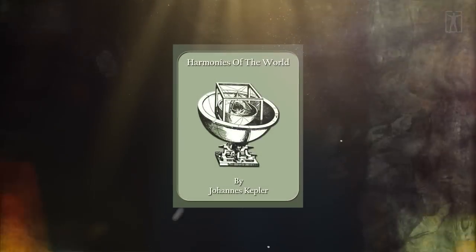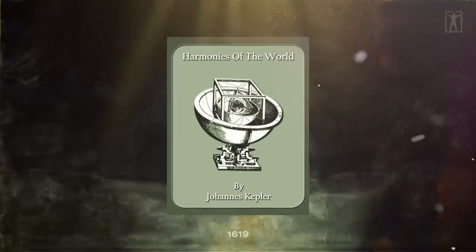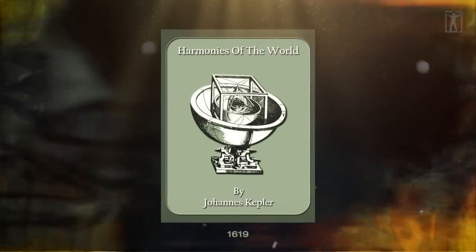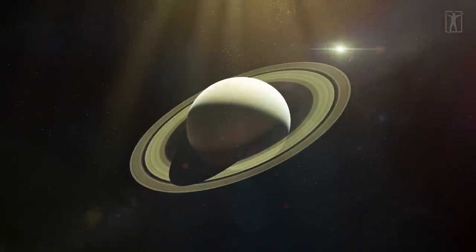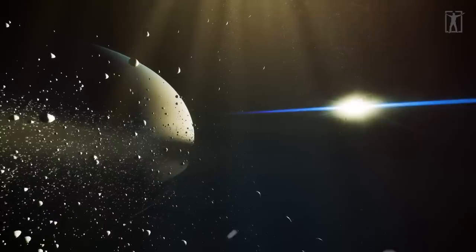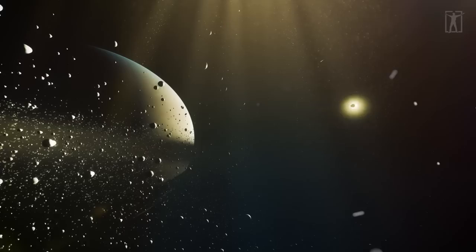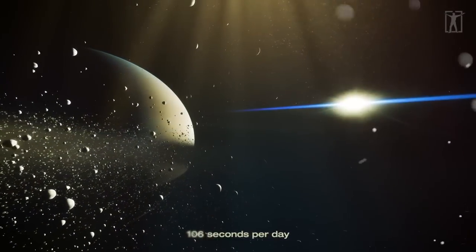Kepler's final work, The Harmonies of the World, was published in 1619. In it, Kepler presented his discovery that when Saturn is farthest from the Sun, it moves at a rate of 106 seconds per day.